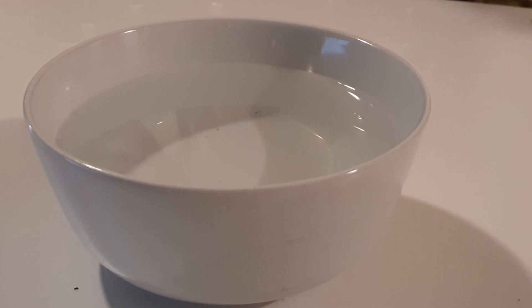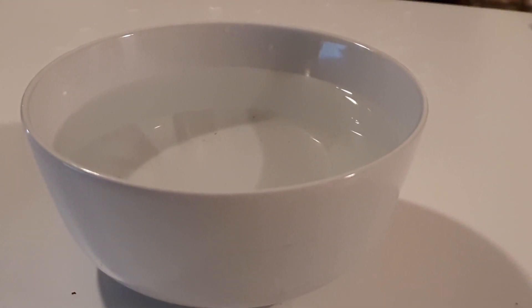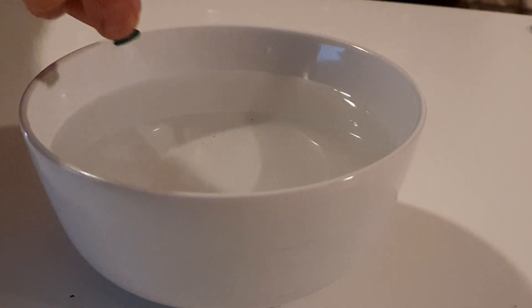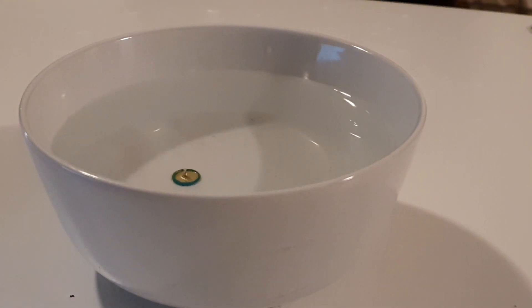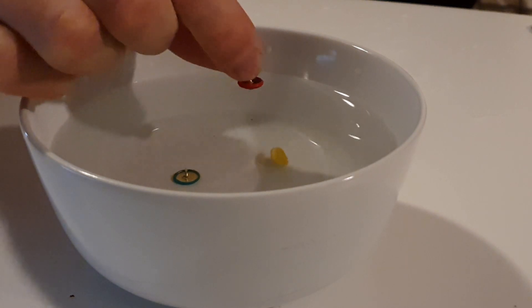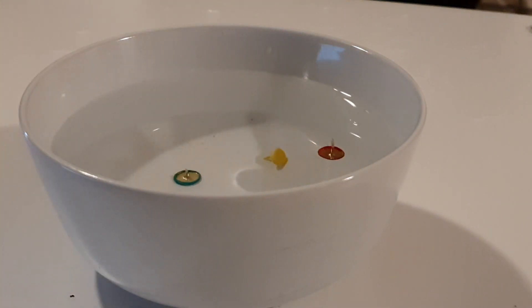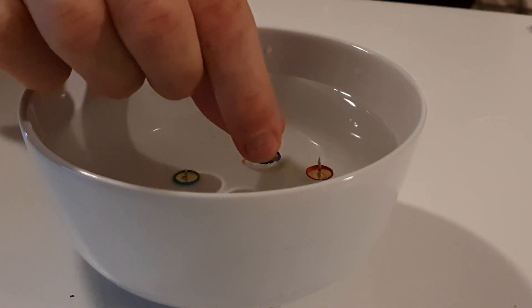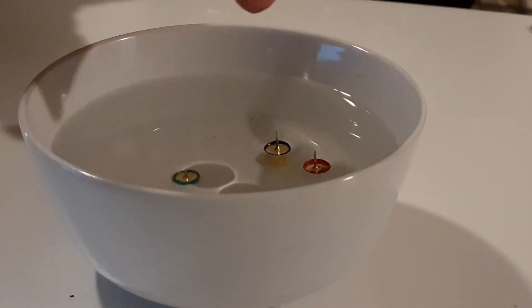You can wonder what would happen if you use objects that have a larger density than water, like drawing pins. Due to their larger density, drawing pins won't be buoyant. And when you just throw them in the water, they will sink. But when placed carefully on the surface of the water, they do actually float. This is entirely due to the surface tension of the water, which is strong enough to withstand the gravitational force pushing the drawing pin down.